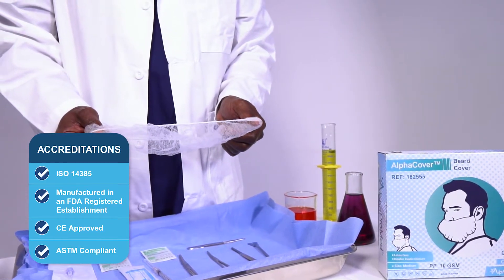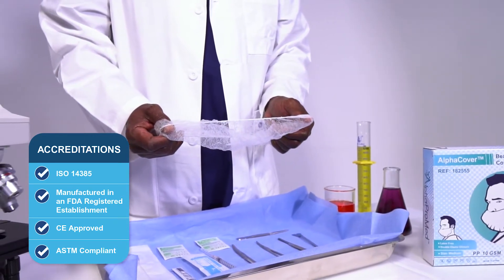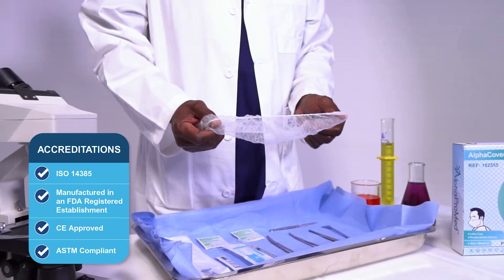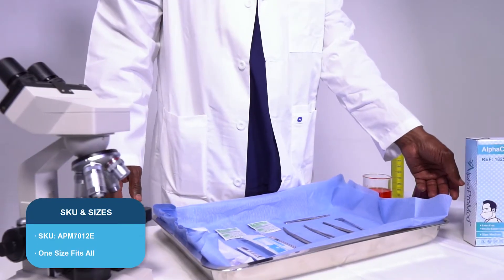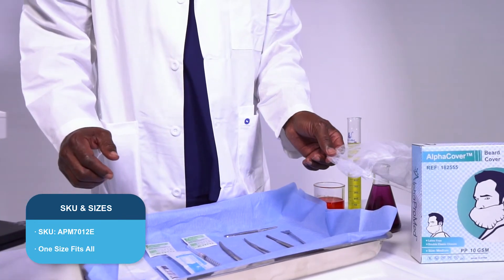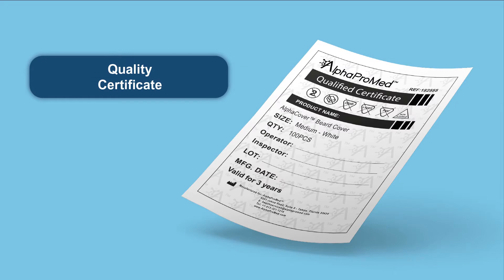Alpha Cover beard covers are FDA registered and each box is produced according to the most rigorous ISO and GMP standards. Custom sizes, colors, preferences, or white labeling services are available upon request. Each box produced carries an incumbent certificate of quality and conformity so you can have the peace of mind you're only using the best product for the safety of you and your patients.